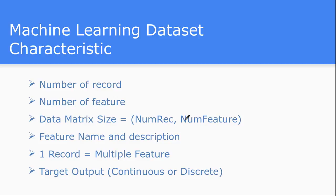Let's see first what the characteristics of a dataset should be for building a machine learning system. The first one is the number of records — you should have data about how many records you have as input to the system. The number of features is the characteristic of individual instances of the data. If you have a number of records and a number of features, you will have a total data matrix of size: number of records by number of features. Number of records will be the number of rows and number of features will be the number of columns.